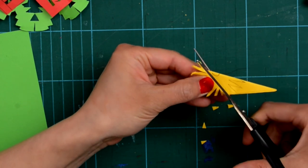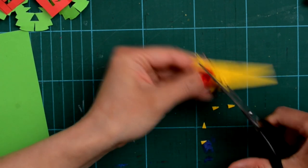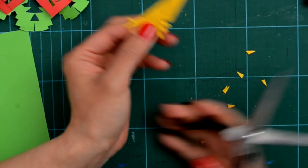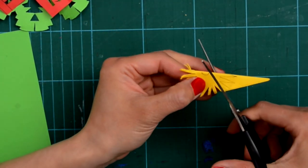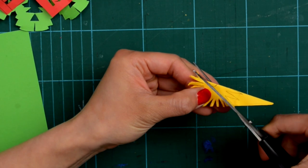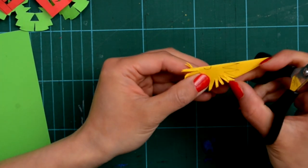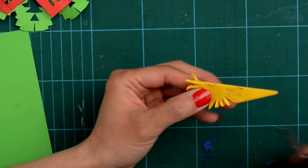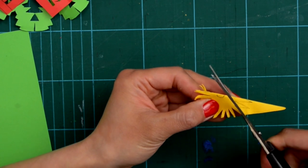So try to keep one or two or three connected and then the whole flower will be like a ring, be connected. Otherwise it's gonna be individual flowers.